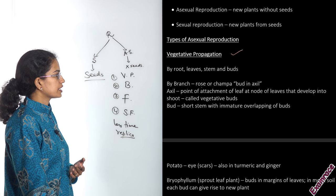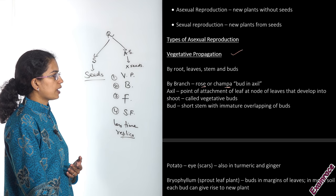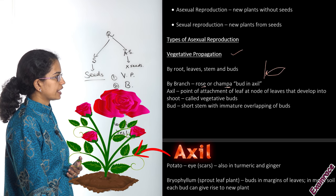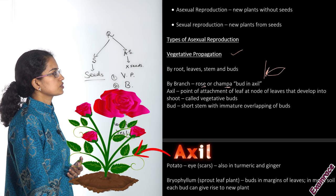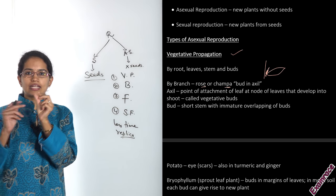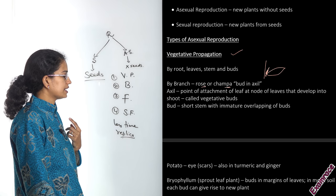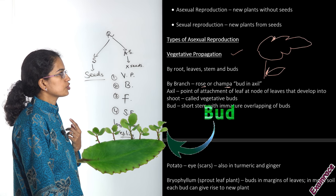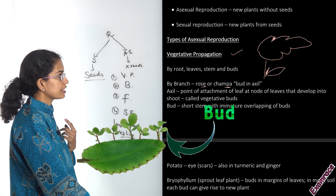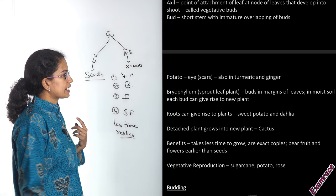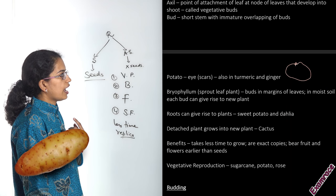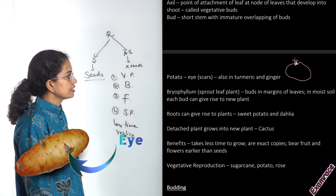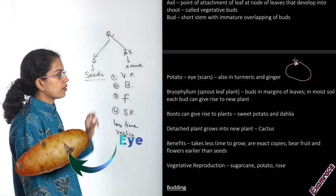Vegetative propagation can take place through various ways. Rose is a good example involving branching. Similarly, champa has a bud in the axil — the axil is the point of attachment of the leaf to the node. This bud develops into a shoot known as a vegetative bud. A great example is bryophyllum, where buds develop on the leaf itself — a very unique process. For potato, ginger, and turmeric, you have the eyes or nodes, also known as scars, from which new plants grow.